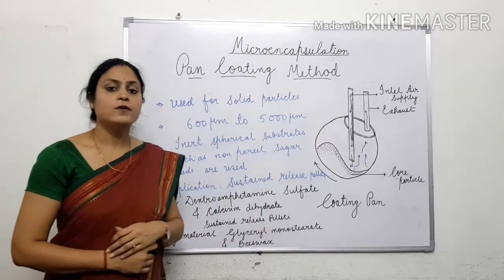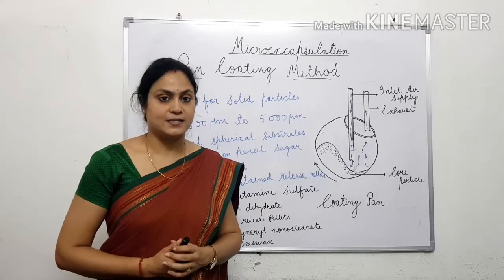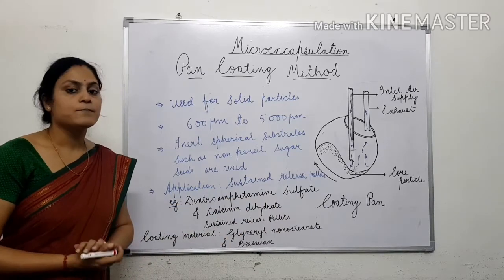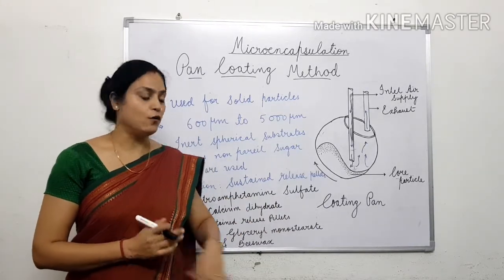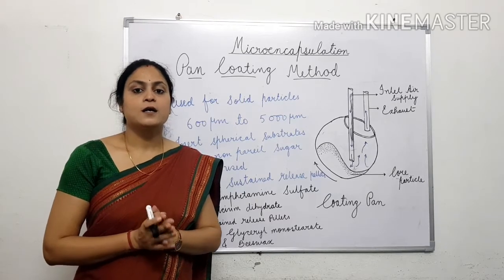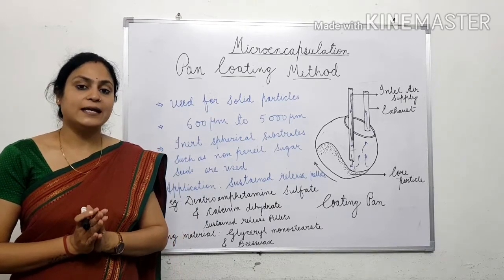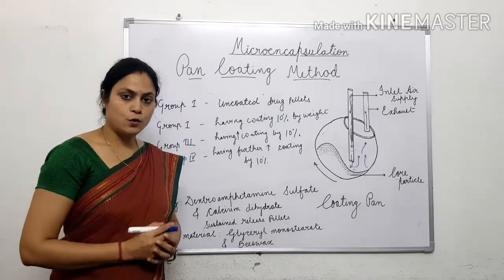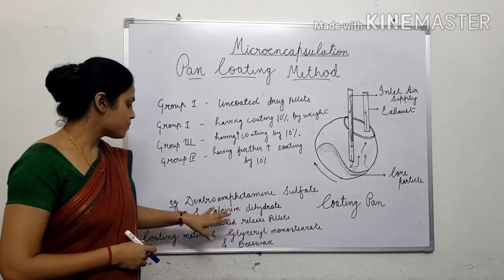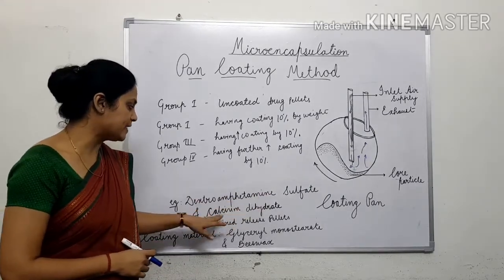The main application of this pan coating method is the formulation of sustained release pellets. For example, sustained release pellets of dextroamphetamine phosphate and calcium dihydrate are prepared with the help of a waxy coating polymer — using waxes and fatty acids such as glyceryl monostearate and beeswax. How are these sustained release pellets formulated?